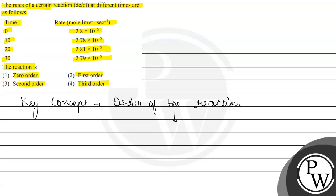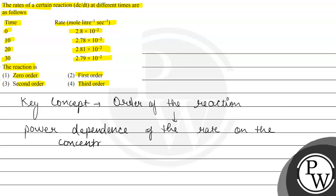Order of reaction basically tells us in what way the rate depends on concentration — it is the dependence of rate on the concentration of the reactants. If we have rate equals rate constant multiplied by concentration raised to power 0, this is how we represent the rate law for zero order of reaction, which shows that the rate does not depend on concentration and will remain constant.